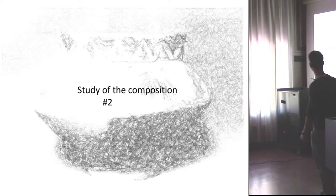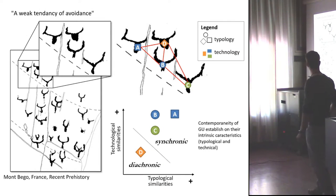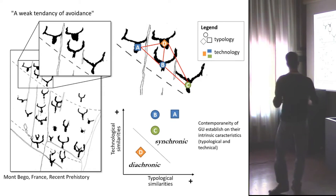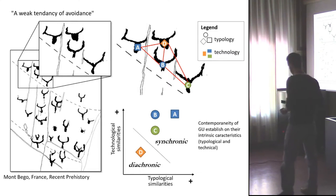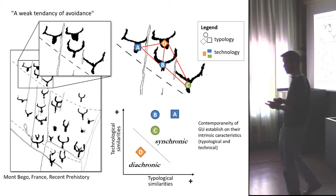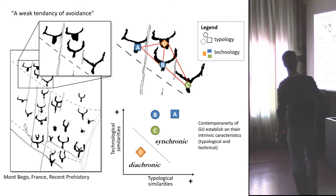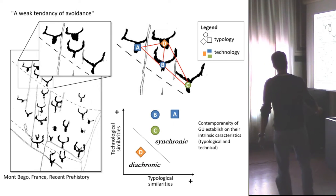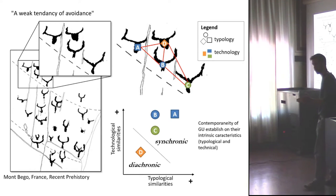For the second proposition — to see if graphical units are associated together — there are, according to me, only two relevant domains of intrinsic quality: typology and technology. The postulate in statistics is the unimodality of the period of realization of engravings, which allows seriation. So if graphical units are similar technologically and typologically, you can group them as a single archaeological event.